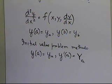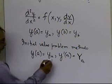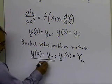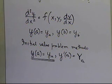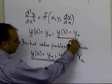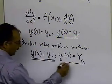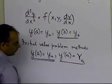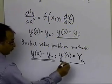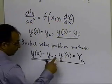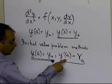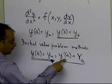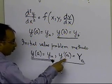So what the shooting method is all about is this: you know the condition at x equal to a because that's given. However, you are replacing the boundary condition at b by an initial slope condition y'(a), because that's what initial value problem methods require you to do.